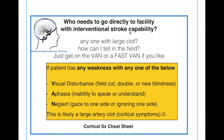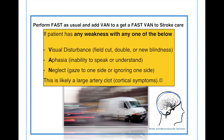Who needs to go directly to a facility with interventional stroke capability? Simply someone who is VAN positive — or, if your area uses the RACE score, LAMS score, or Cincinnati Prehospital Stroke Severity Score, those work too. But VAN is easy: no numbers to calculate, it's a yes or no. We've used it and it works just as well as other screening tools — we feel it is easier and currently more accurate, though we're still collecting data. Perform FAST as usual, and add VAN to get a FAST-VAN to stroke care.